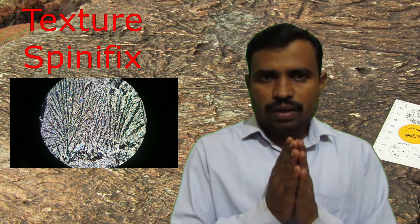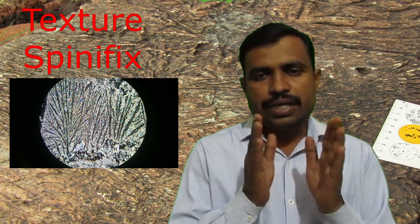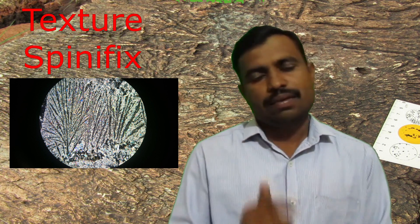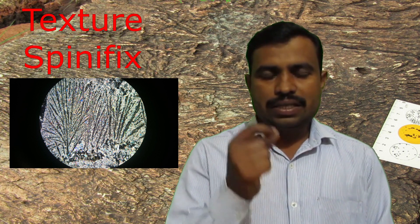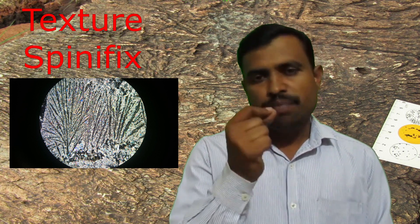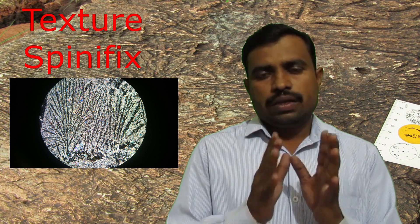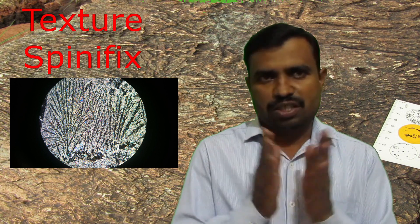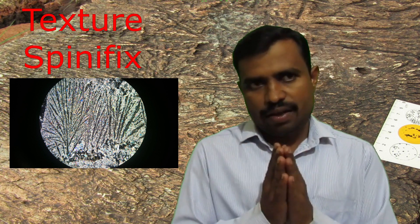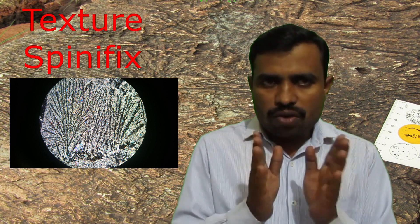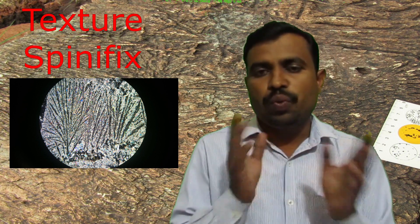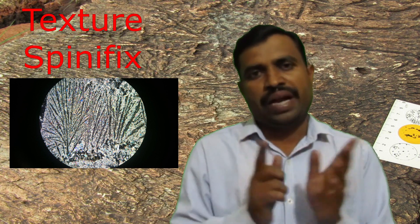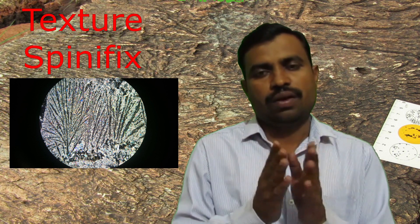In komatiite rock there is one unique texture present. Texture is the mutual arrangement of the grains among themselves. When we see this rock, that is the komatiite, there is a specific texture — the name of that specific texture is the spinifex texture. This komatiite rock characteristically shows linear growth of olivine and clinopyroxene, mimicking a variety of grass from Australia named spinifex. The growth of olivine and clinopyroxene is due to supercooling of very high temperature ultramafic magma, and that is why such texture is found in the komatiite rock.